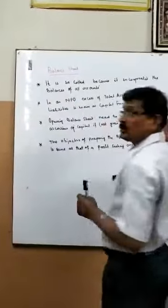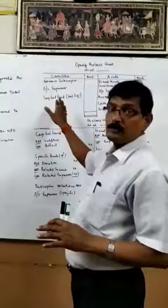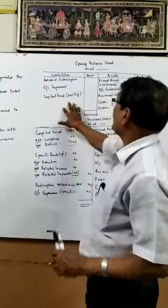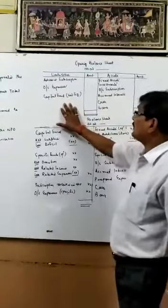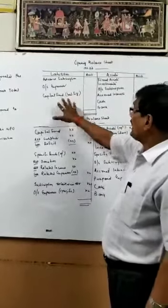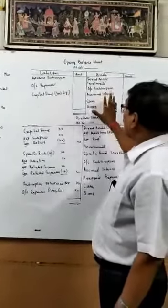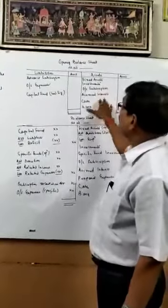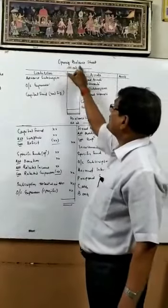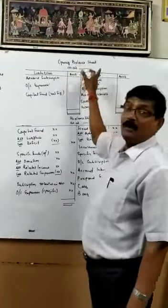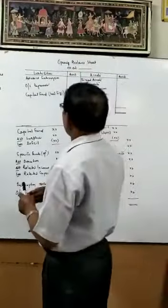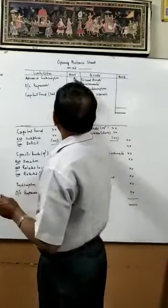Since it is a statement, it does not have any debit side or credit side. The left-hand side records all liabilities and the right-hand side records all assets. When preparing the balance sheet, remember to write the heading as 'as at' — do not write 'for the year and date.'